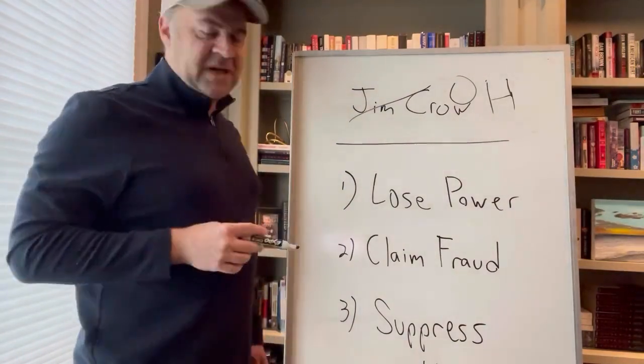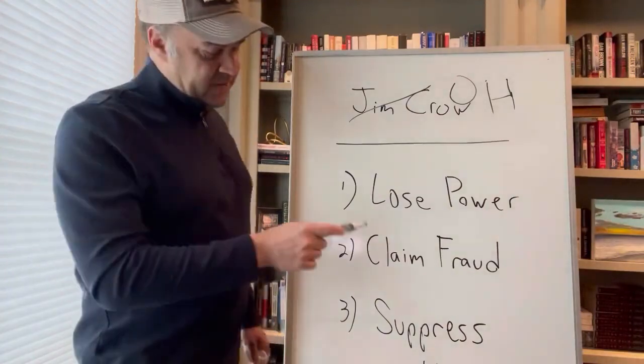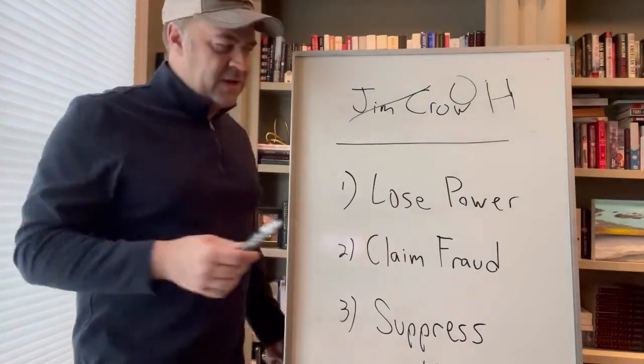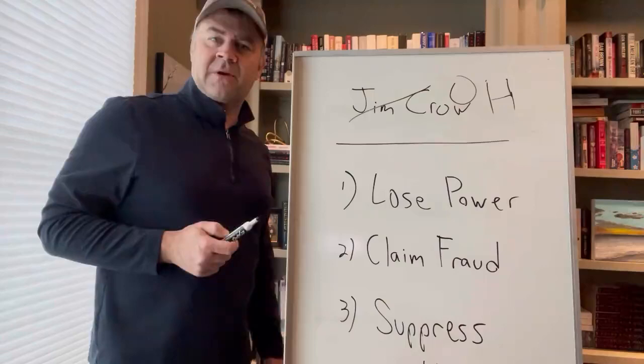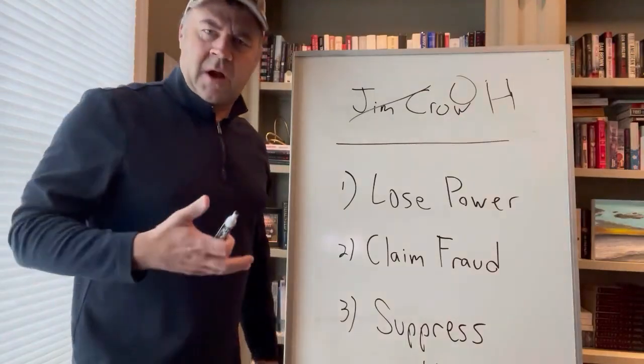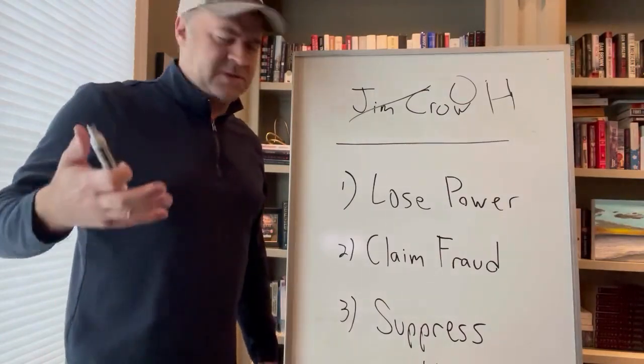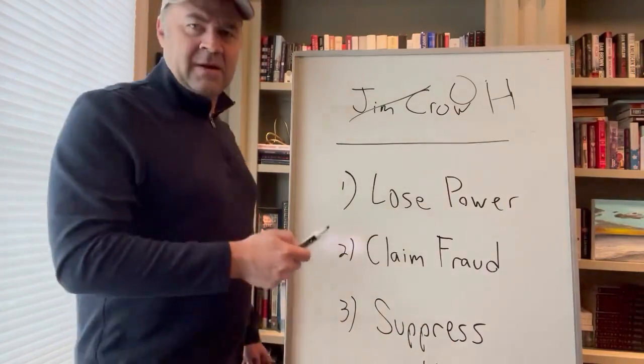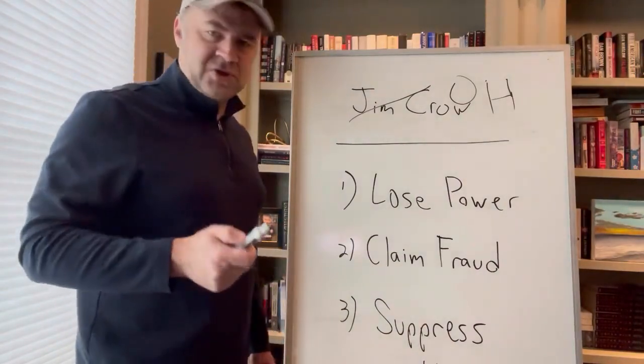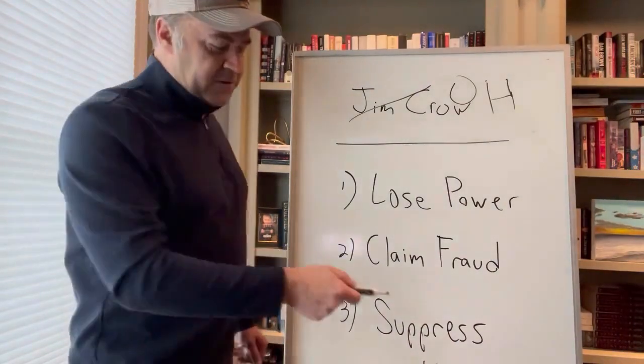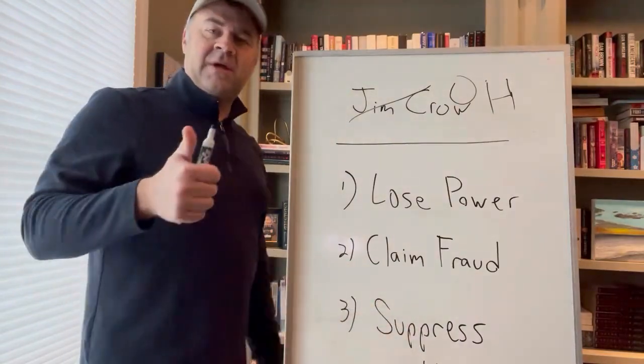And ever since they've had a chance to change that, they have claimed, with no evidence of course, that there was a problem with voter integrity, that there's been voter fraud. Again, no proof, no evidence, no nothing. And ever since then, they have been pushing to change the rules of how we vote to suppress that new coalition.